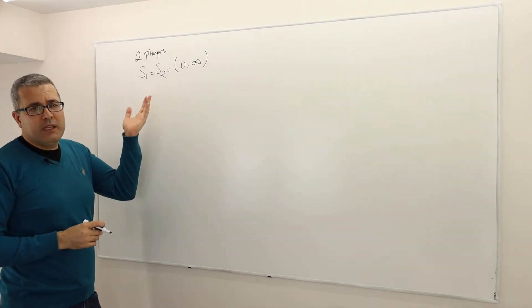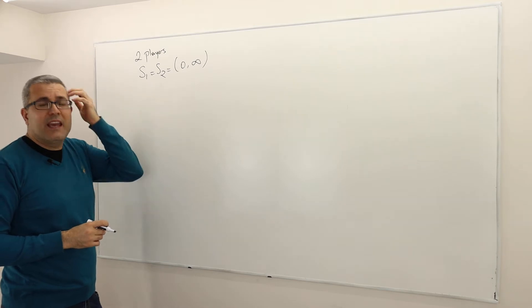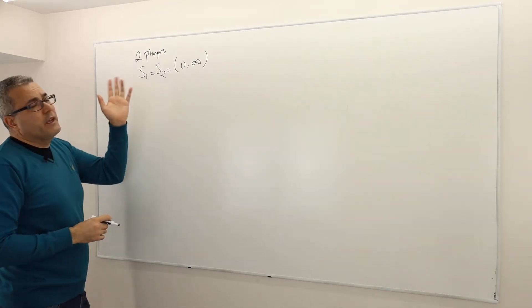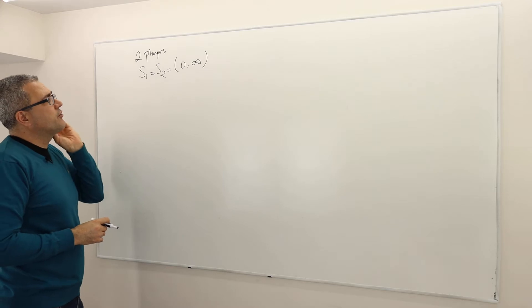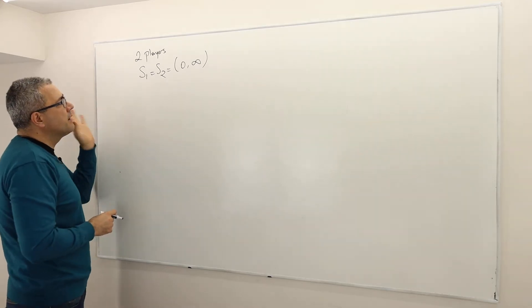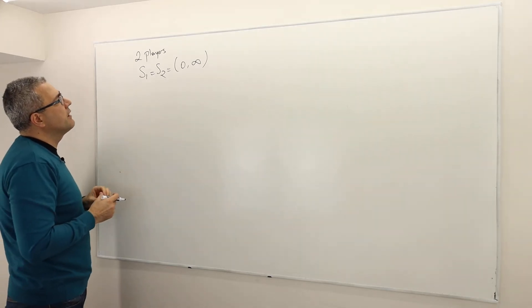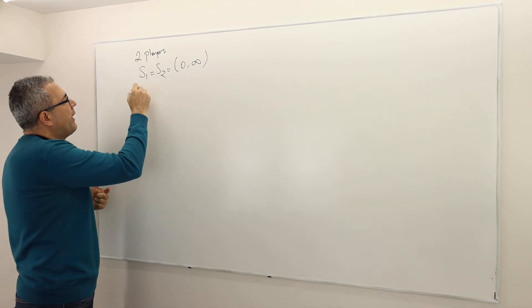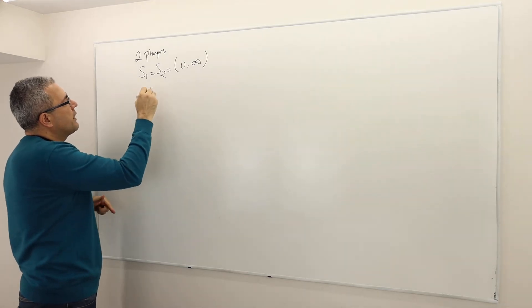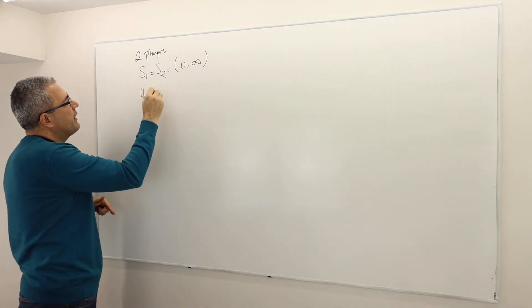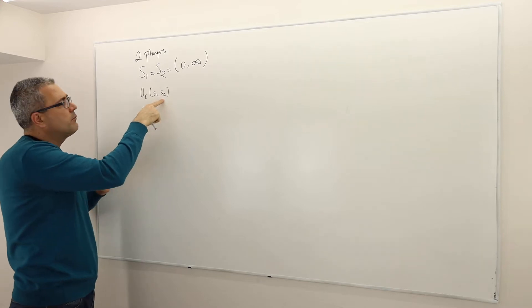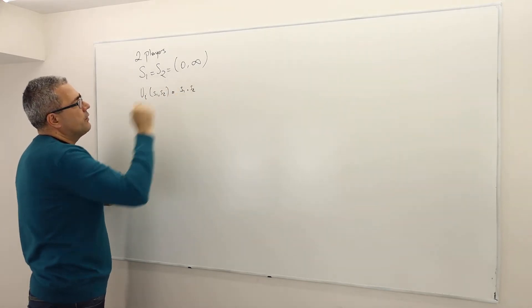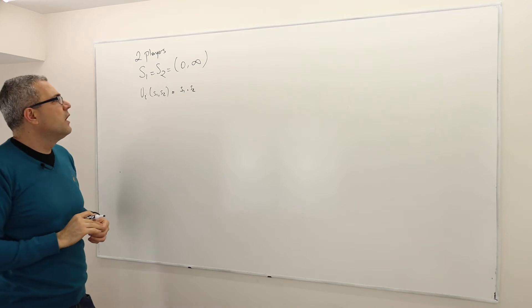Any positive real number is okay — it doesn't have to be an integer, it can be a real number. By the way, it could be natural numbers; the set of naturals could be just fine. But anyway, leave it as is. What are the payoffs? The payoff for each player, once they pick S1 and S2, is going to be S1 times S2. As simple as this.